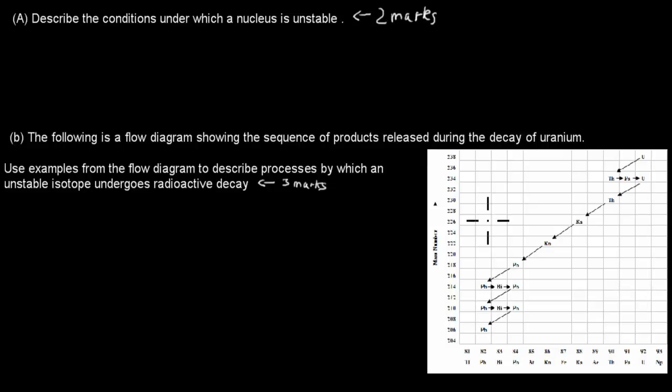Which is this one here. Use examples from the flow diagram to describe processes by which an unstable isotope undergoes radioactive decay, and that's worth three marks. So pause the video now and attempt the question.